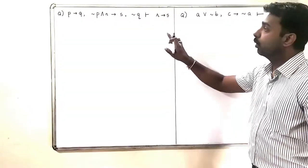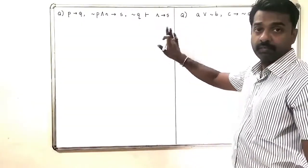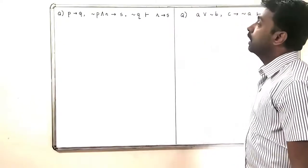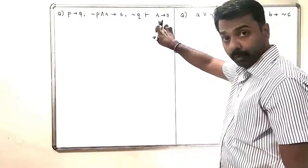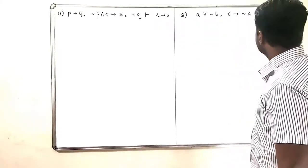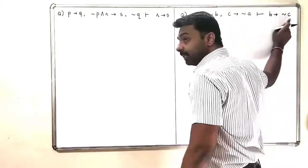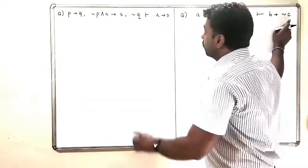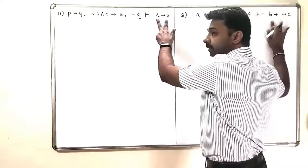In this video, we are going to see two problems and we are going to check the validity. Observe in both the problems that the conclusion here is R implies S and the conclusion here is B implies negation C. So, both the conclusions are implications.